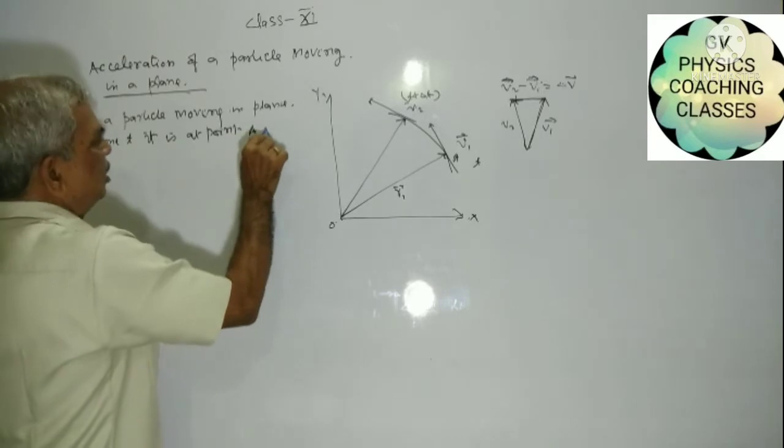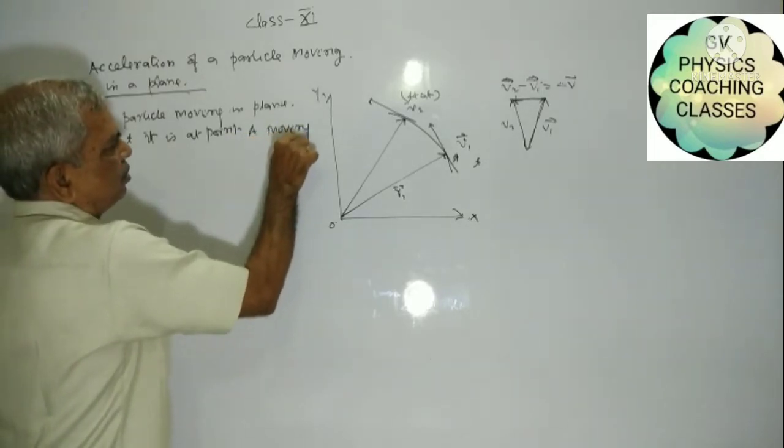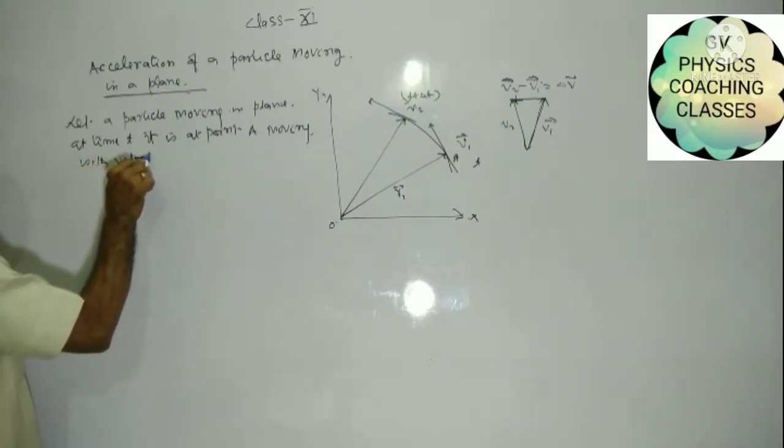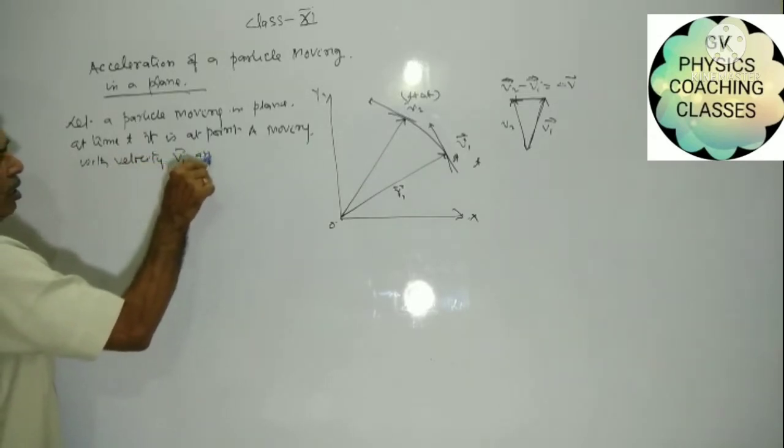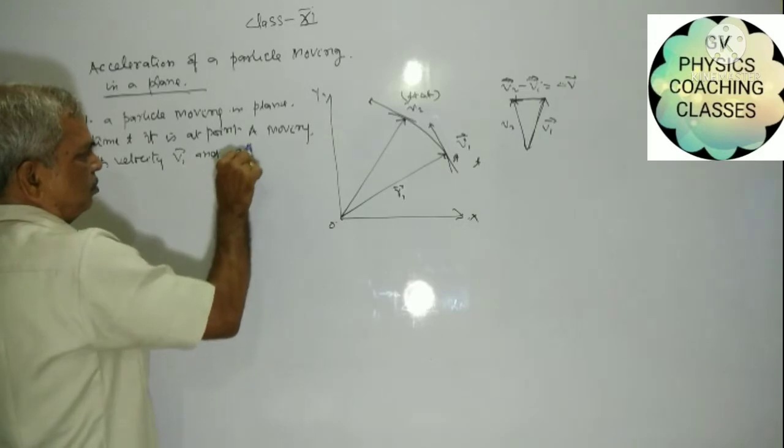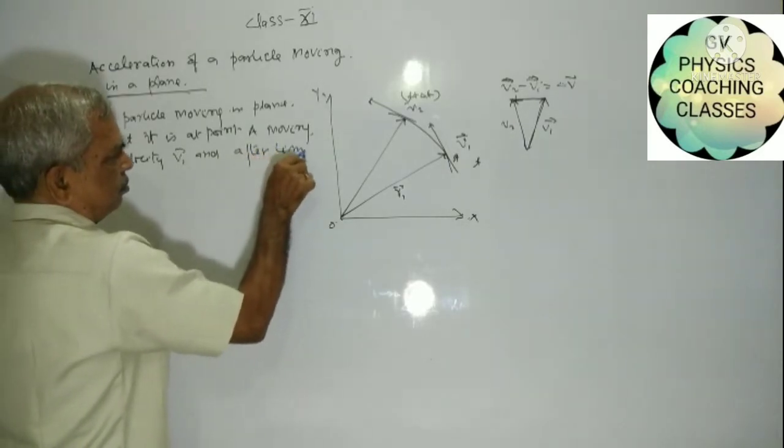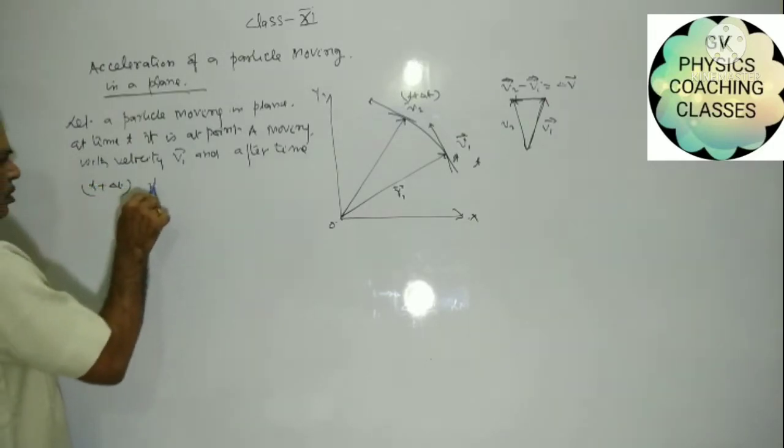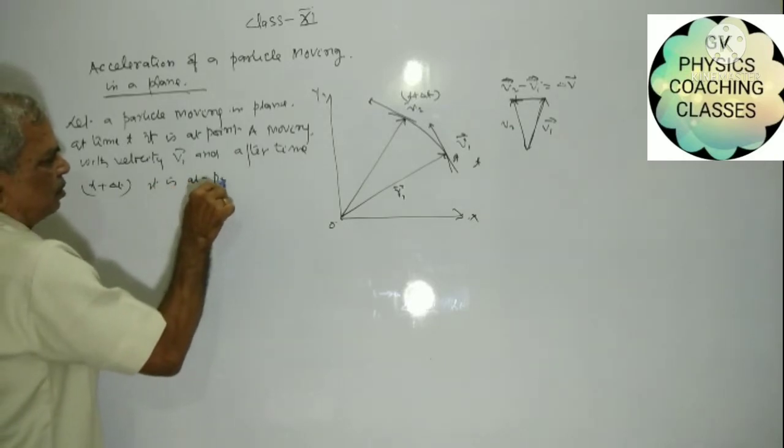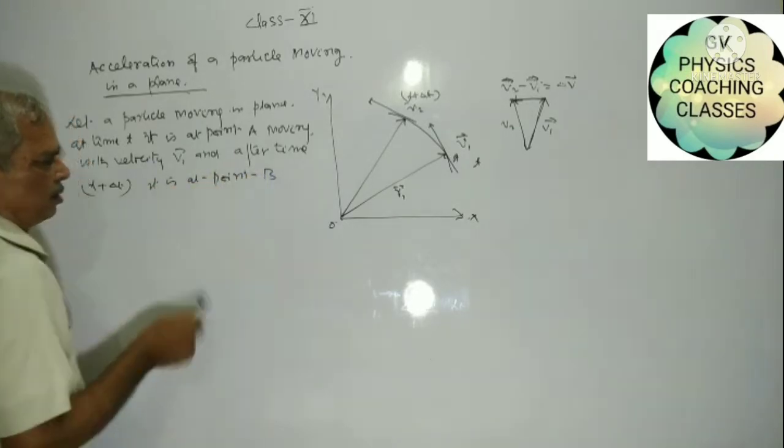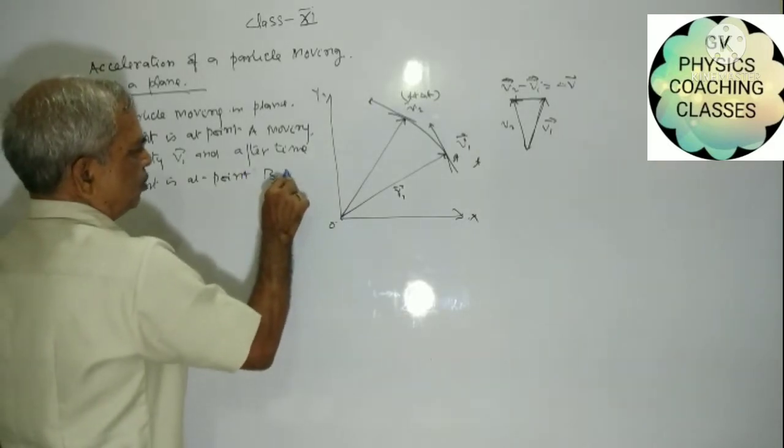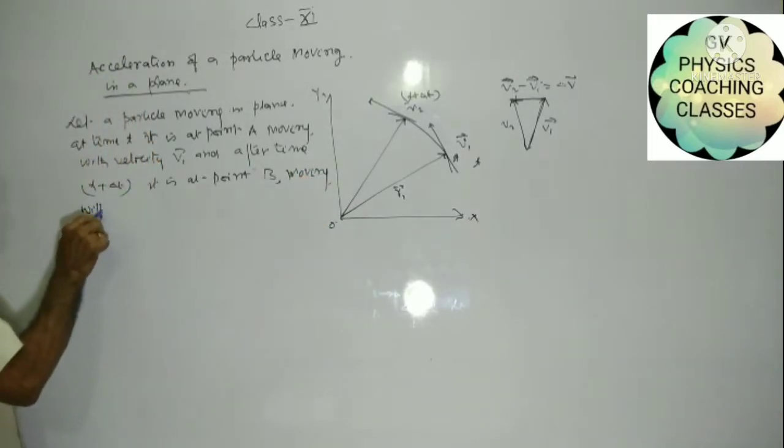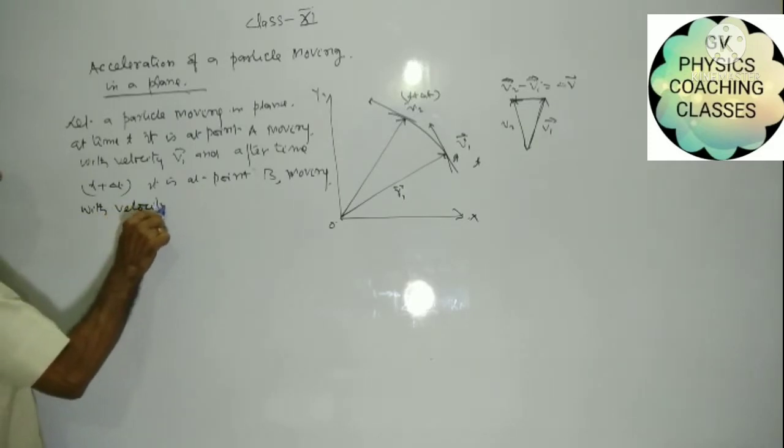At time T plus delta T, it is at point B, moving with velocity V2.